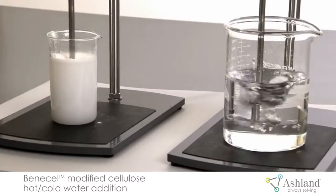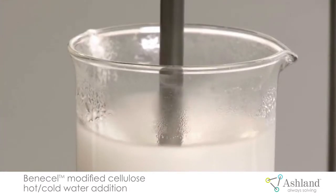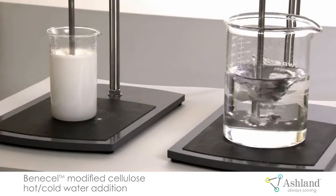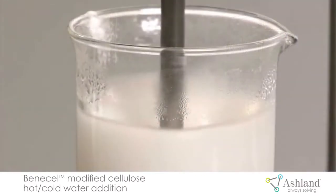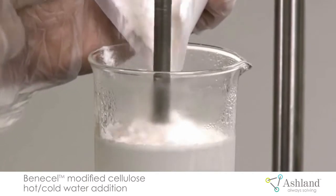To aid in the dispersion of Benecel Modified Cellulose and avoid lumps, you can add the powder using a hot-cold water method. As shown in this demonstration, the hot water acts as a dispersion aid before you cool the water down to the point where the water will hydrate.